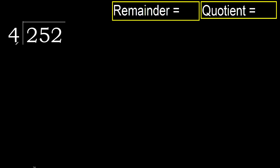252 divided by 4. 2 is less, therefore next. 25 is not less, therefore work with 25. 4 multiplied by which number is nearest to 25?